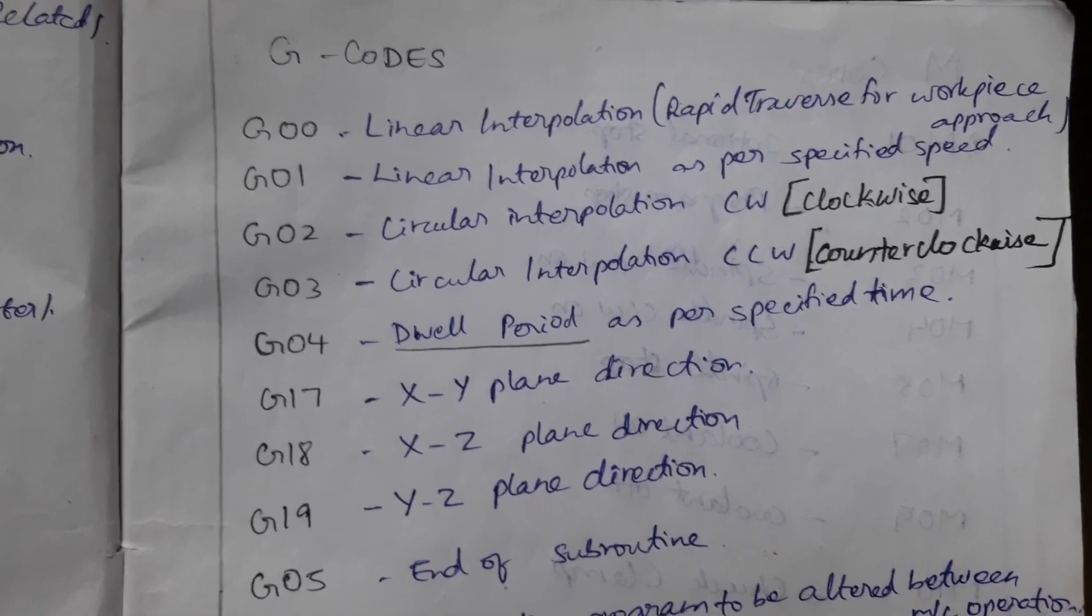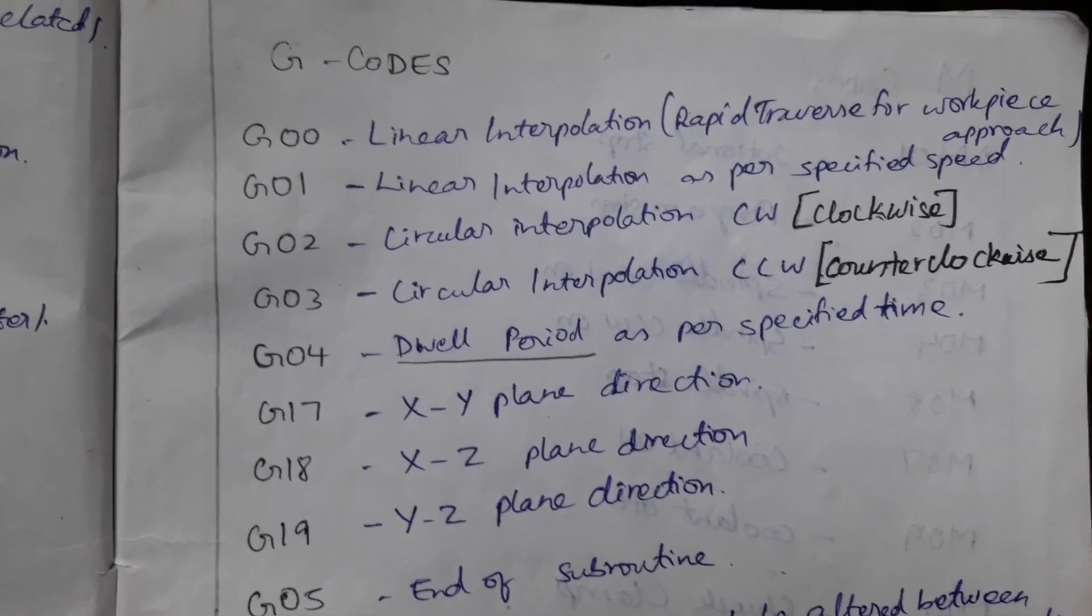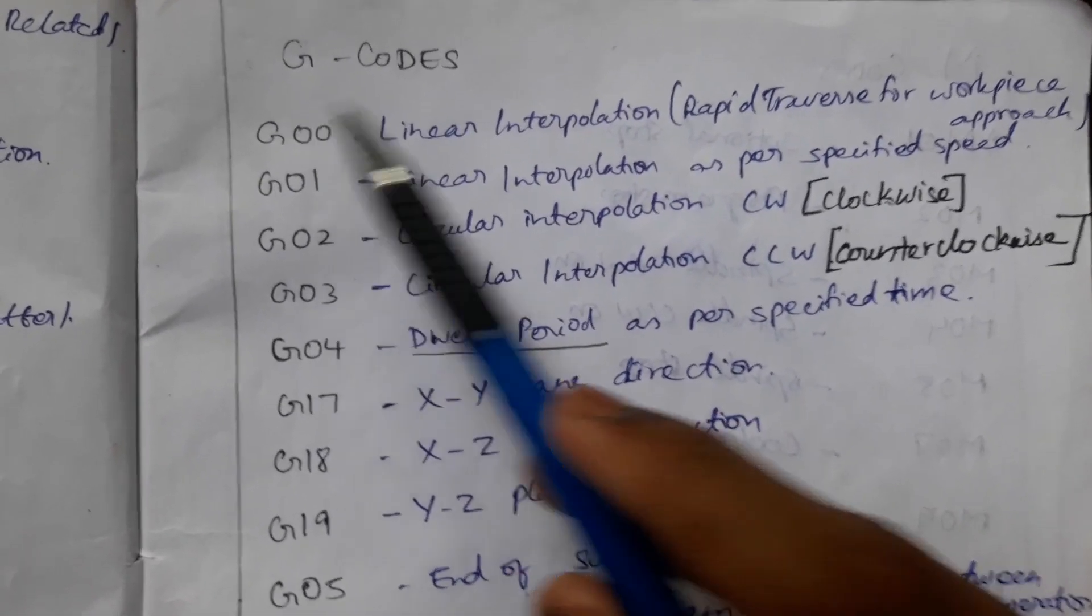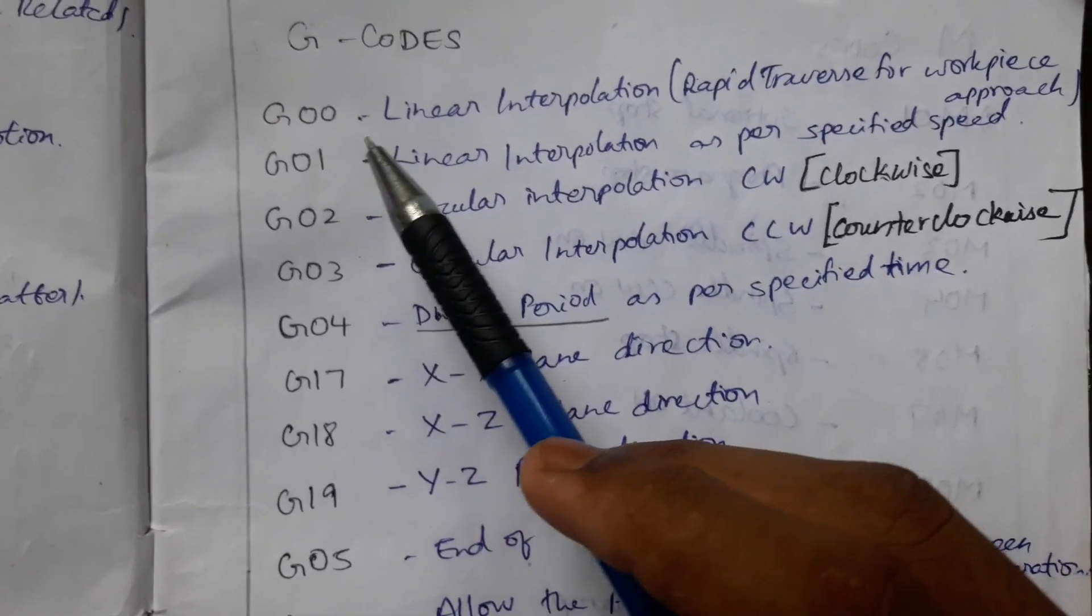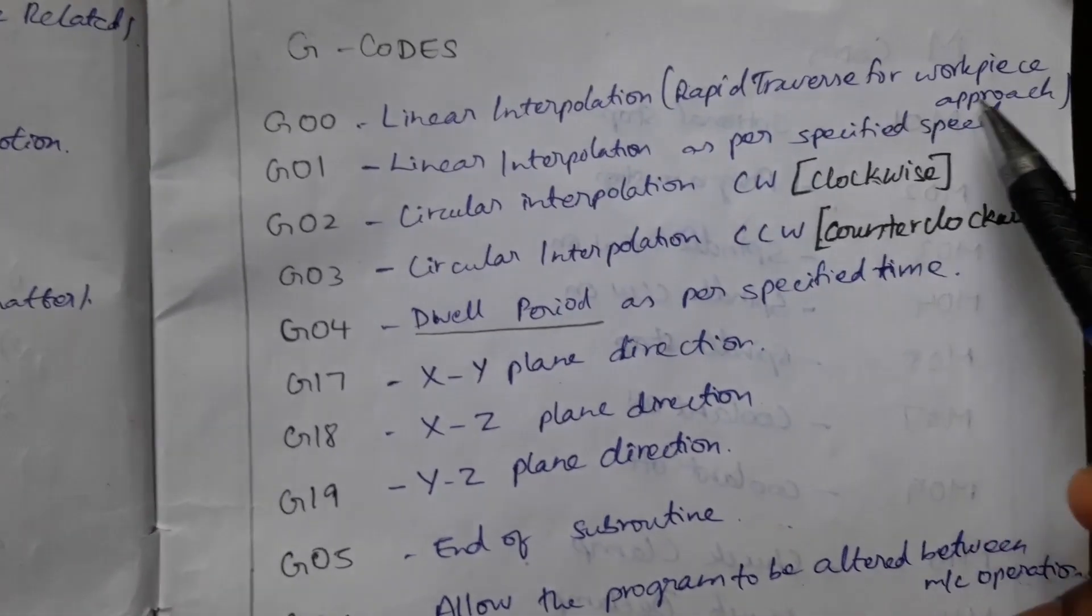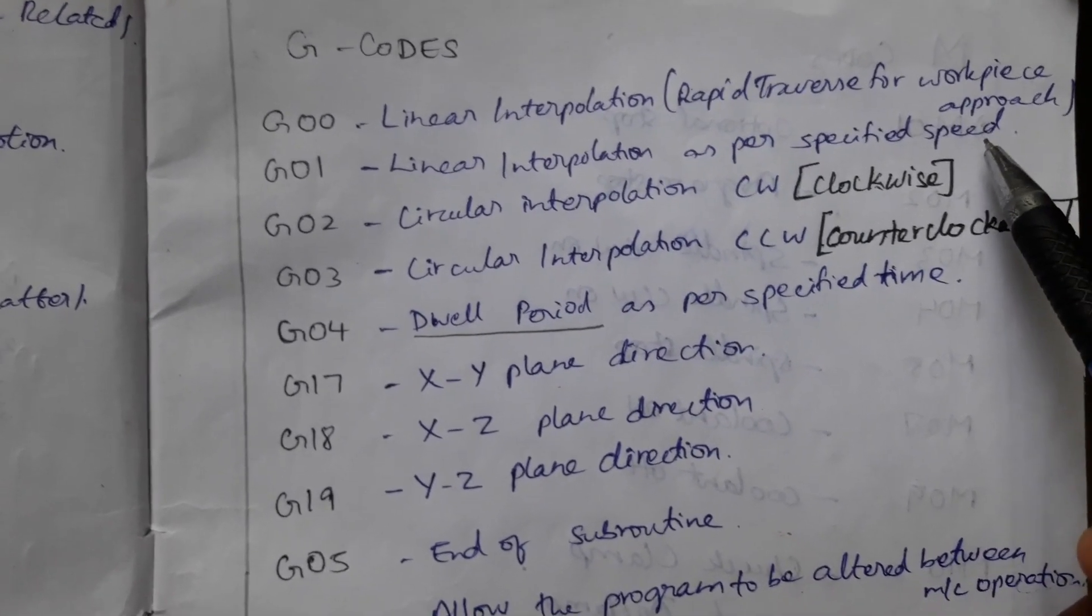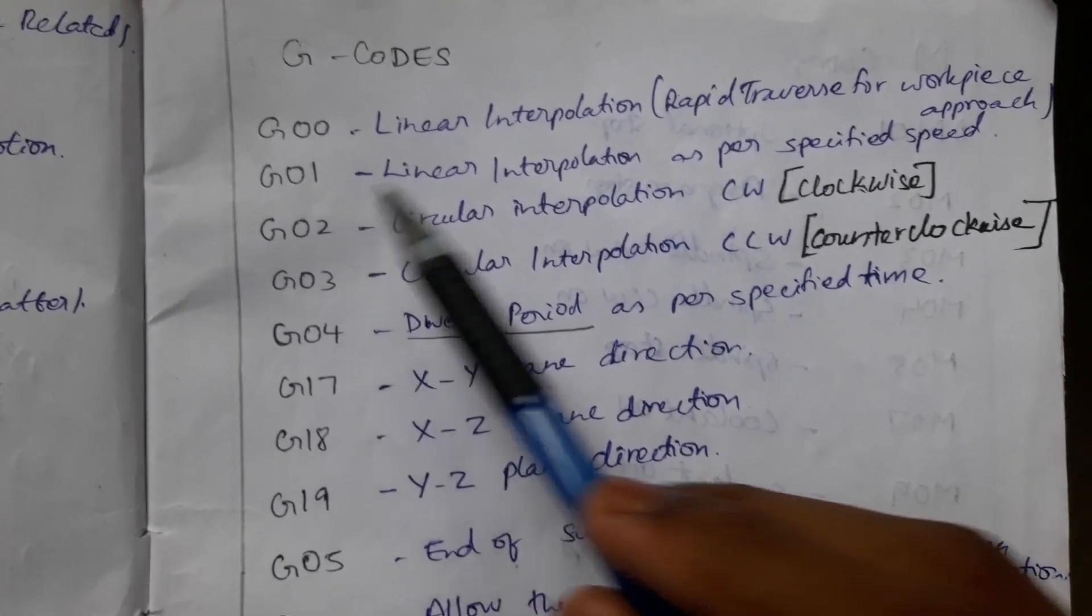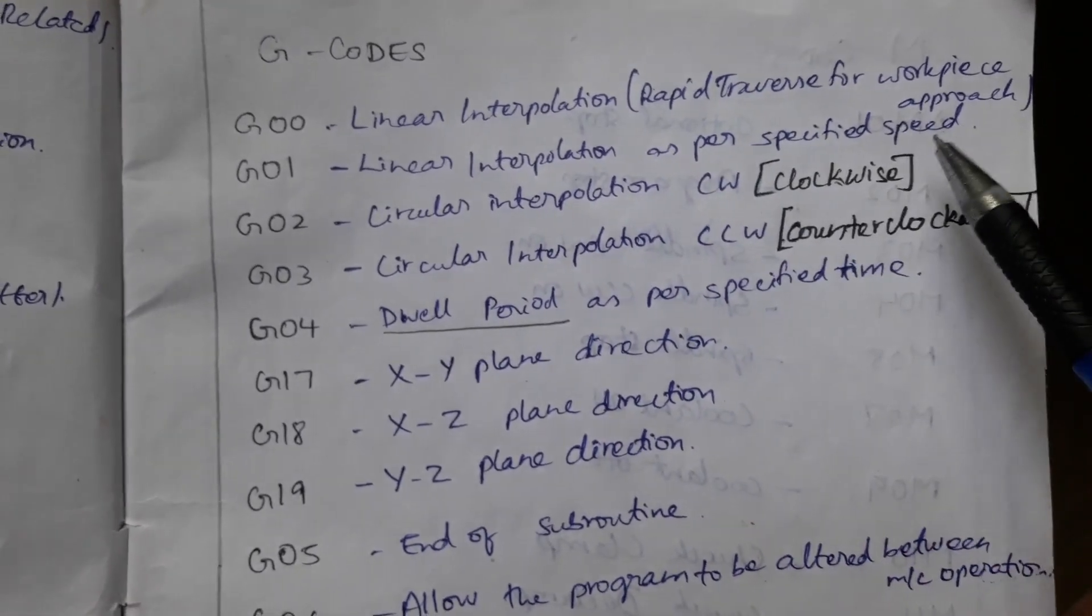Next, the G codes. G stands for geometry, so geometry codes. G00 for linear interpolation, rapid traverse for workpiece approach. G01, linear interpolation as per specified speed.